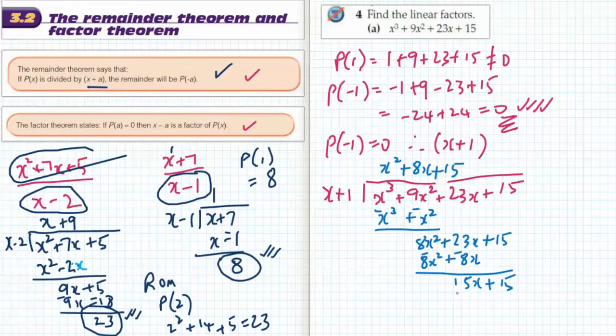15 times x gives 15x. 15 times 1 gives 15. So I've done my division. I got an answer of 0, which is what I wanted. A remainder of 0. That means that this is a factor, and this quadratic is also a factor.